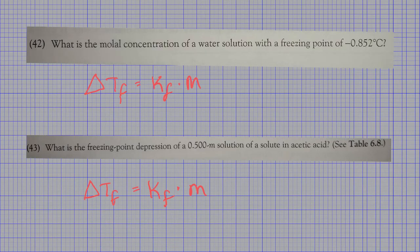Let me just quickly help you set up these two problems. Just a couple things I want to point out. One is on number 42, it says what is the molar concentration, so that is the m. And it says a water solution, so that means we're going to use the 1.86. And then it gives us a freezing point of negative 8.52, and so that's the temperature. So basically you have everything you need and you're just solving for m.